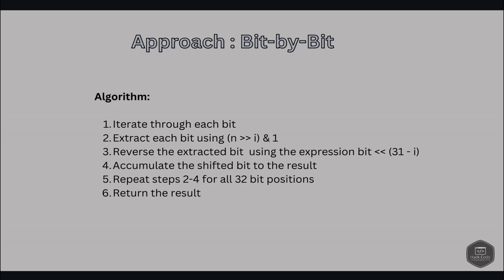The algorithm works as follows. We iterate through each bit position from 0 to 31 since we have 32 bits total. We extract the bit at the current position i using right-shift by i and bitwise AND with 1. We then shift the extracted bit to its reverse position using left-shift by (31 - i). We accumulate the shifted bit into the result, and repeat for all 32 bit positions, then return the result.